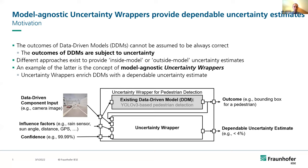An example of the outside-model approach is the concept of model-agnostic uncertainty wrappers. In the pedestrian use case depicted on the slide, a YOLO-V3-based data-driven model is used to detect pedestrians on camera images taken from a driving car. To enrich the data-driven model with a dependable uncertainty estimate for a predefined confidence level, the uncertainty wrapper considers several influence factors in addition to the DDM's input — such as the present weather condition or the distance between the camera and the pedestrians.